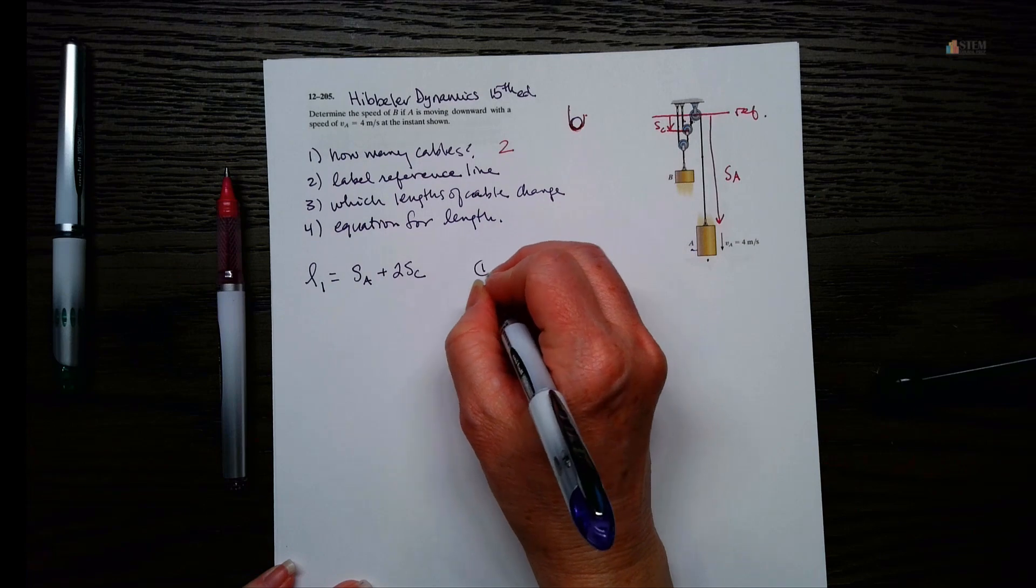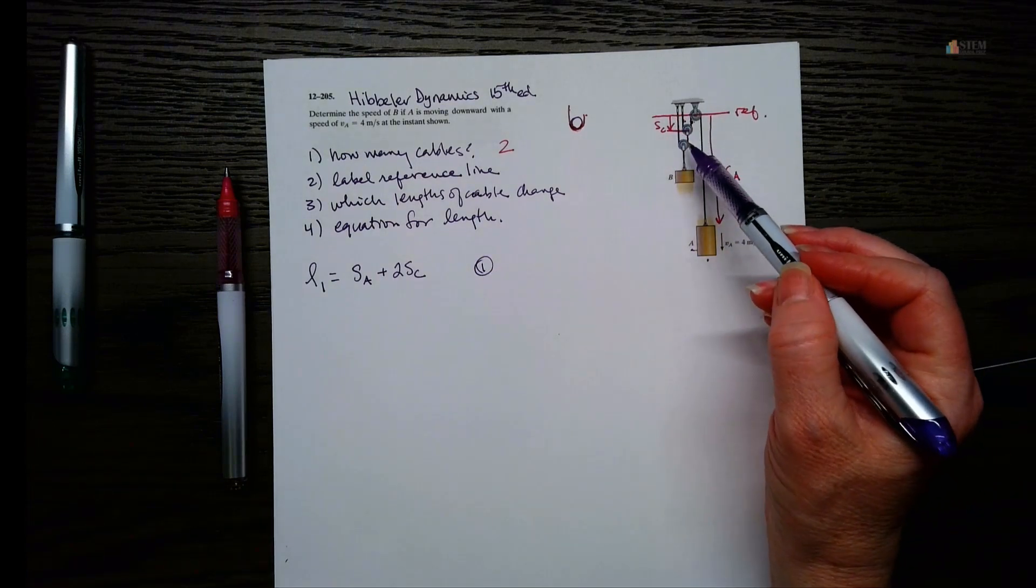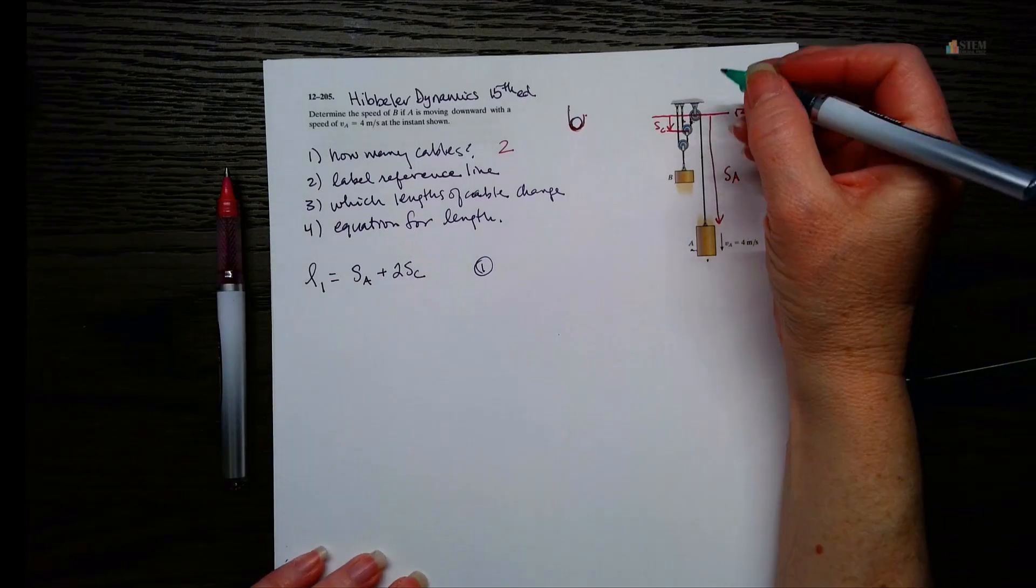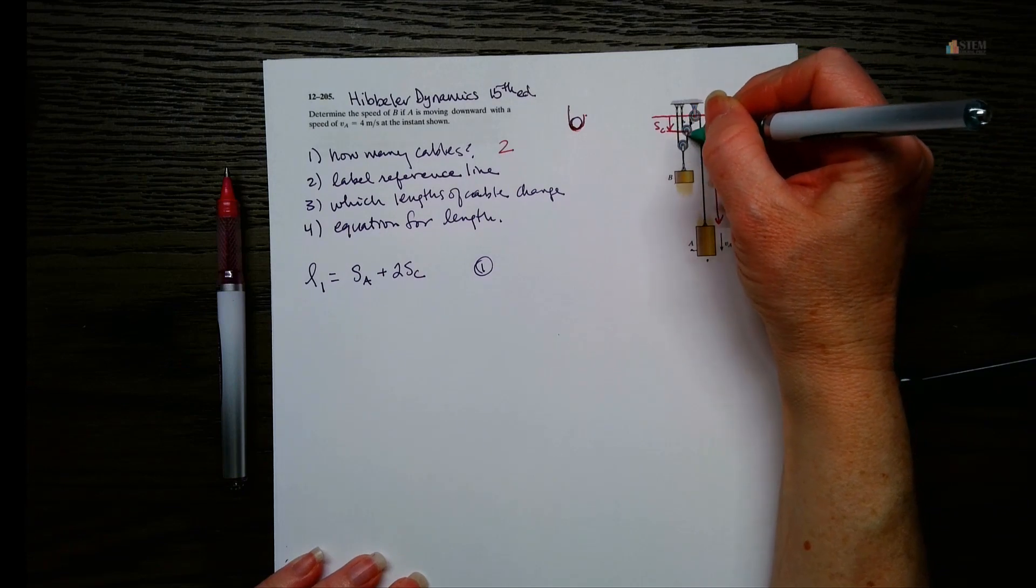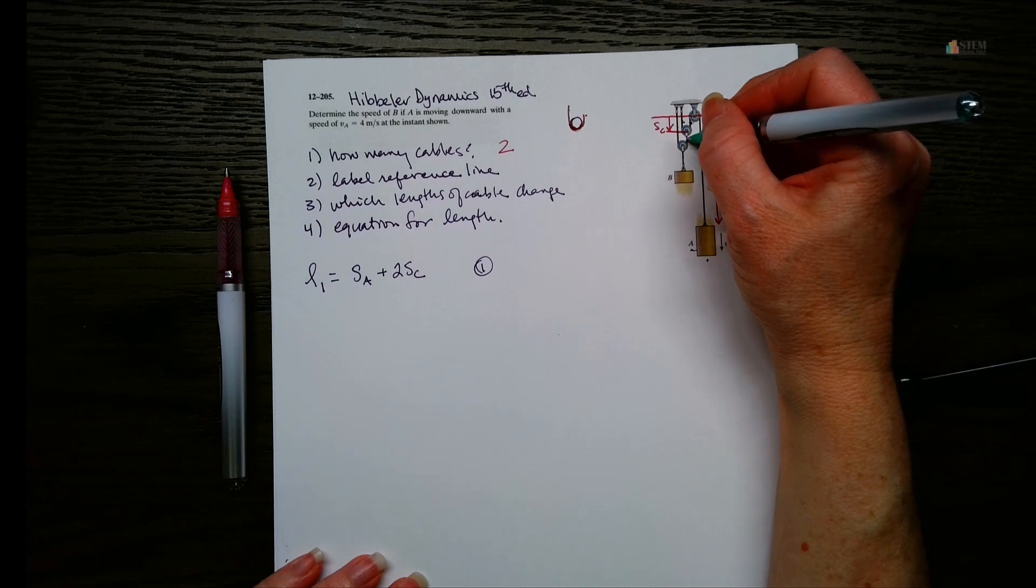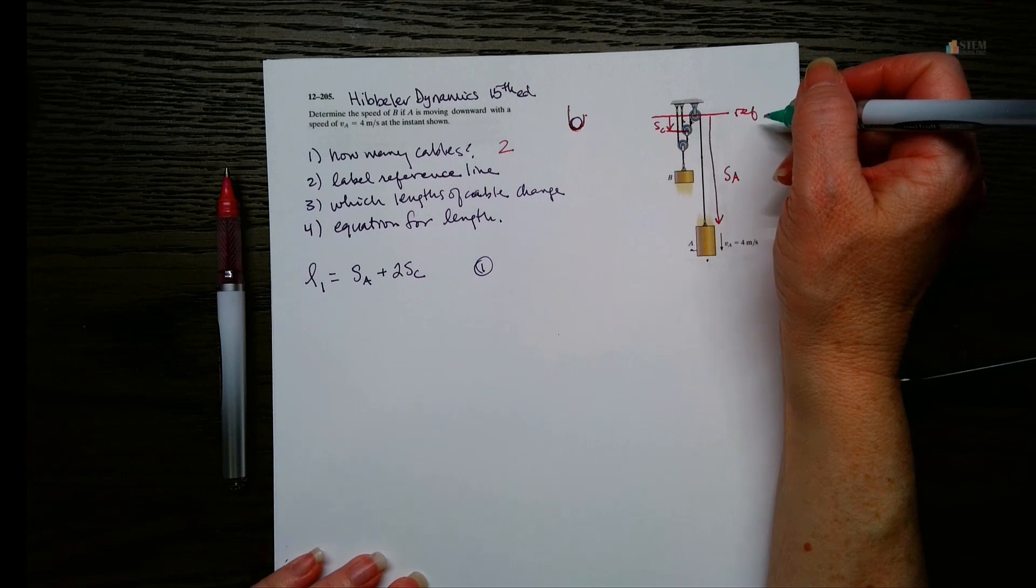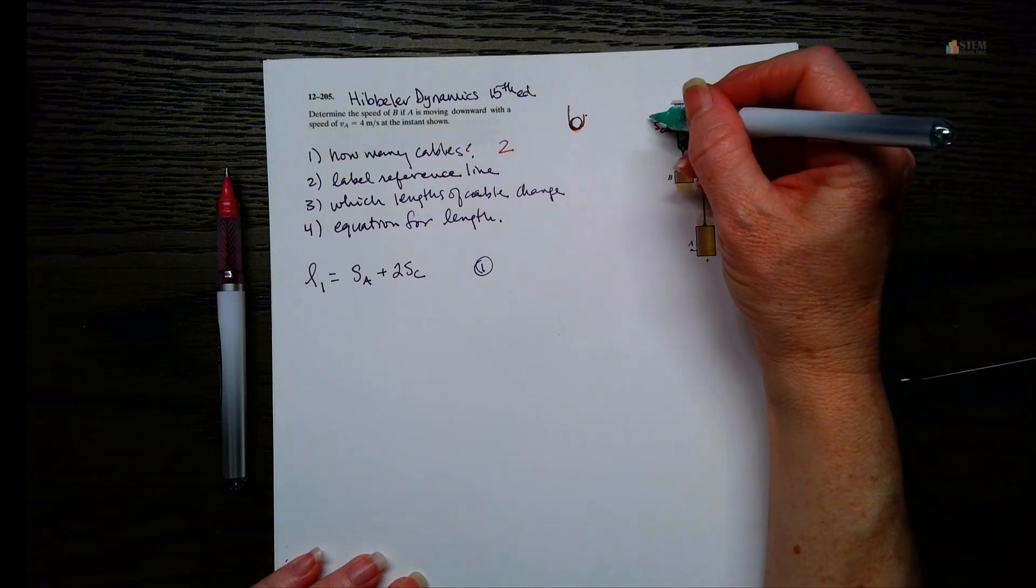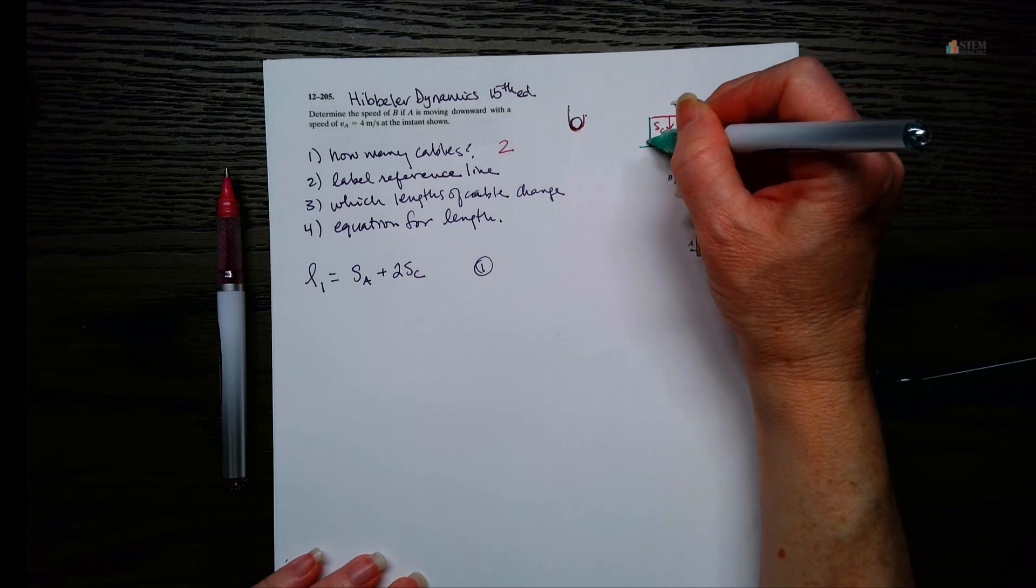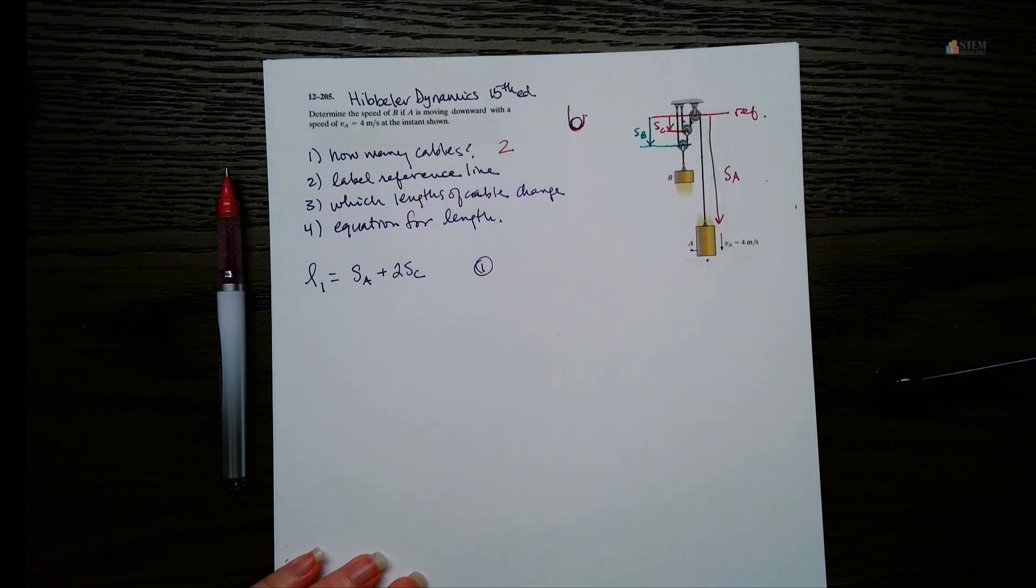Now what we're going to do is do the same thing for our equation, but cable two. Okay, so let's look at that one. So cable two is wrapped around this one pulley, okay? So looking at that, this length and this length right here can change. So what we're going to do is basically measure down to the center of this pulley, and we're going to call that SB.